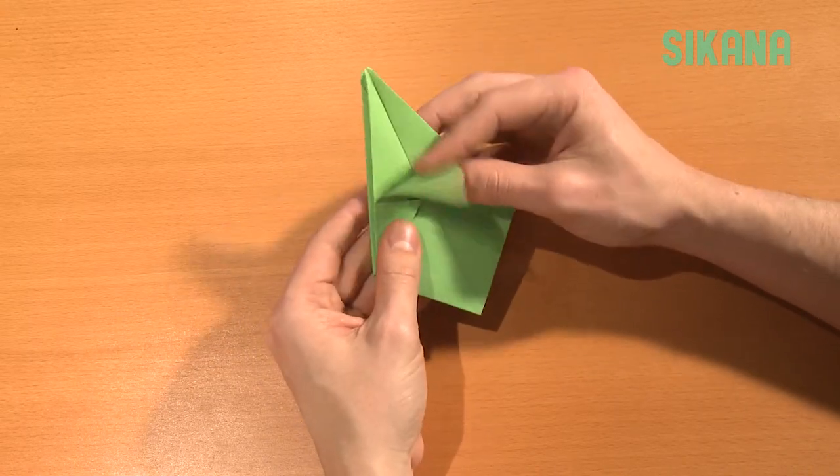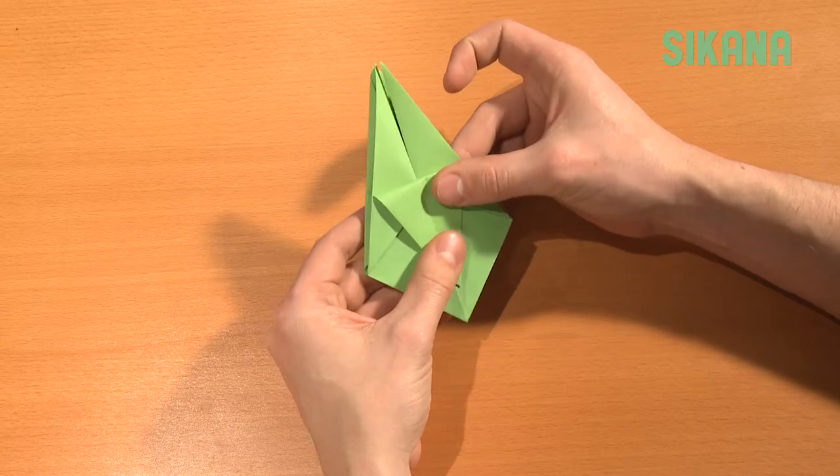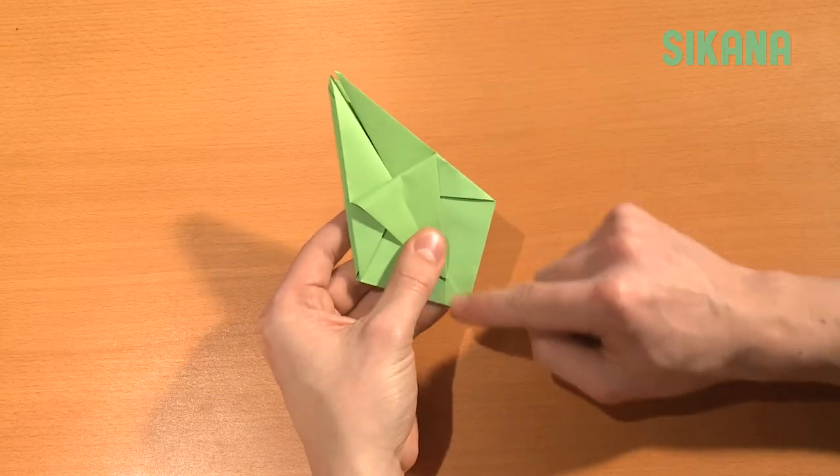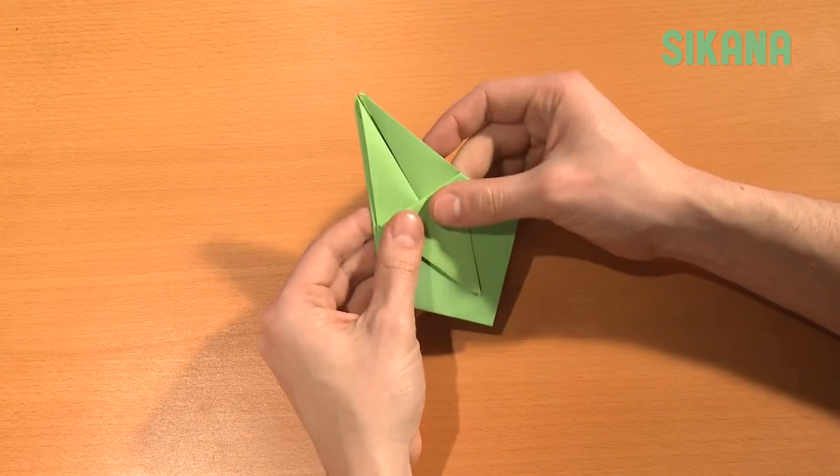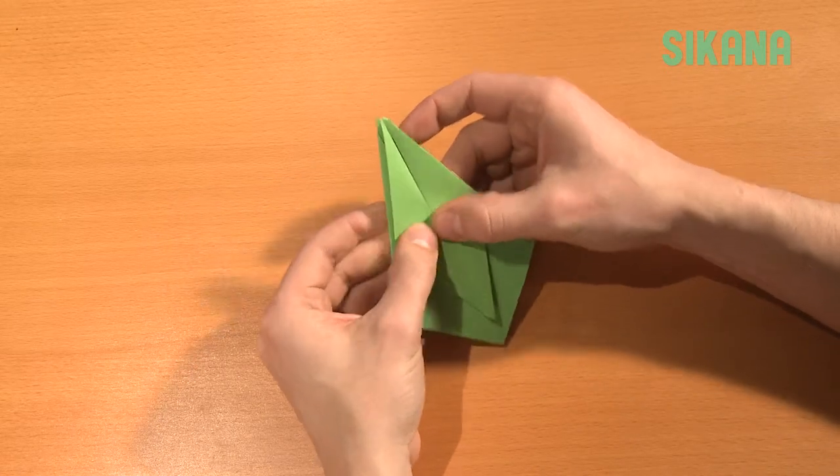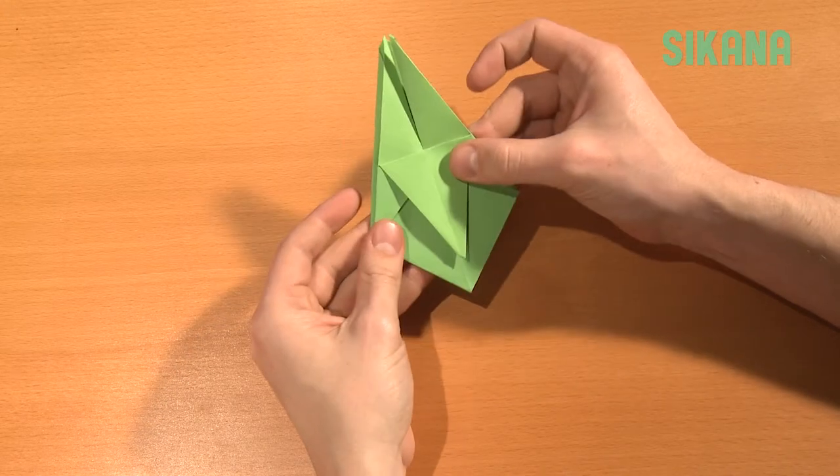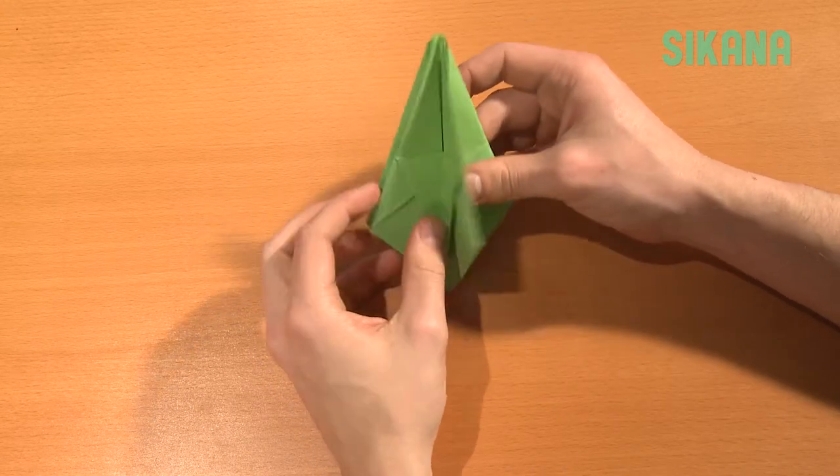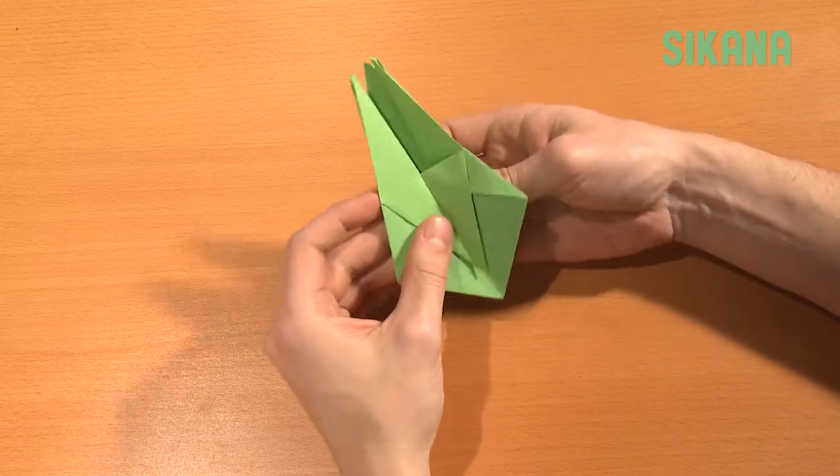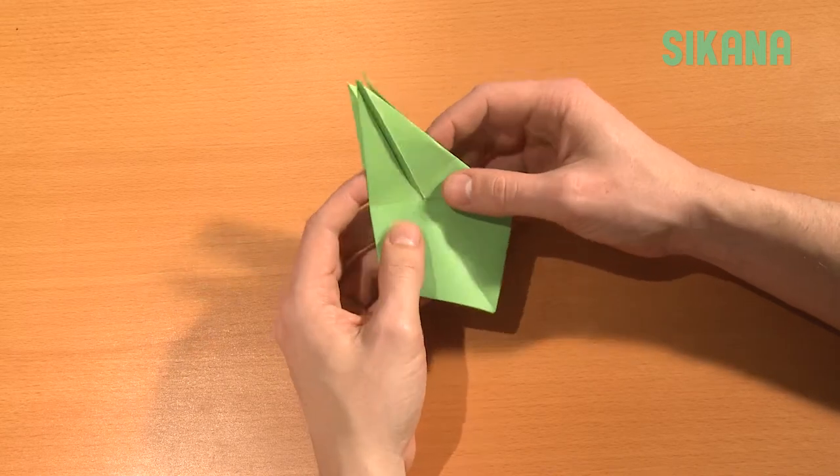Fold this point downward as much as you can along the center line. Repeat for the three remaining sides.